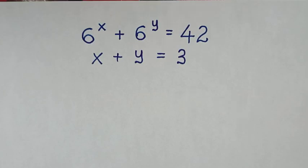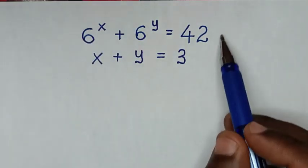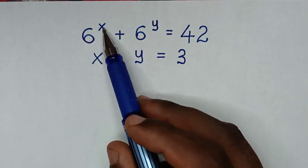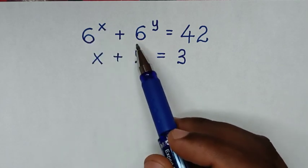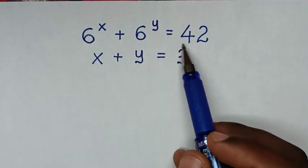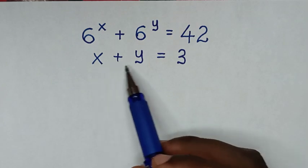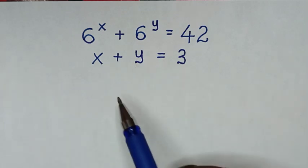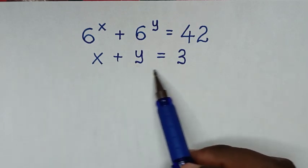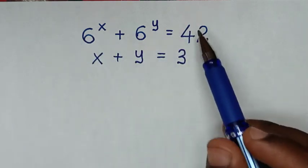Hello, you are welcome to solve this math problem, which is 6 power x plus 6 power y is equal to 42, and x plus y is equal to 3. We need to find the values of x and y from these two equations.